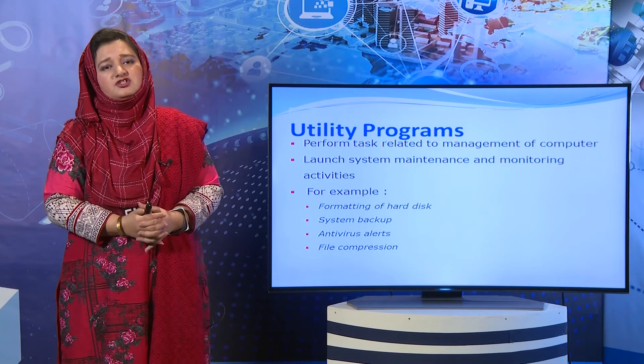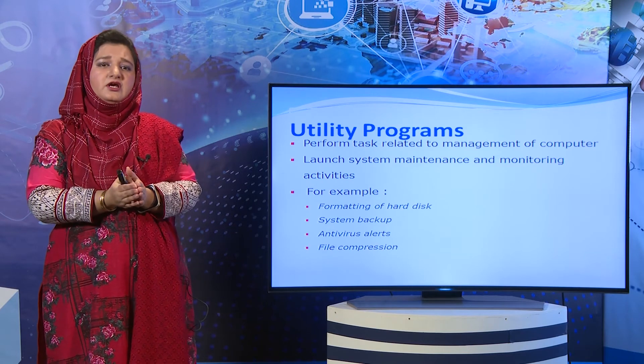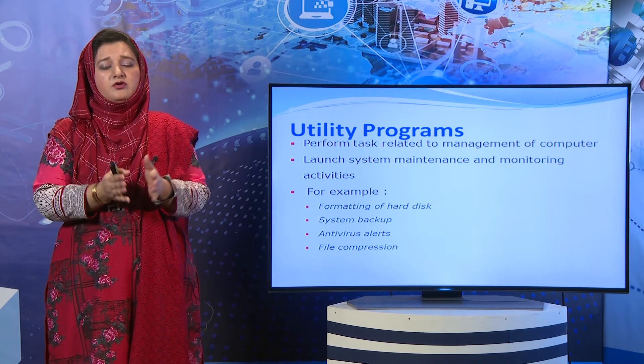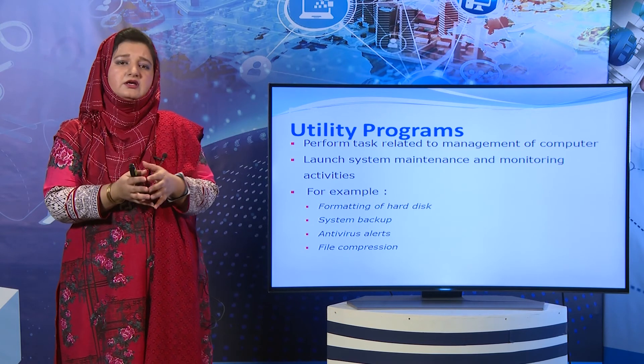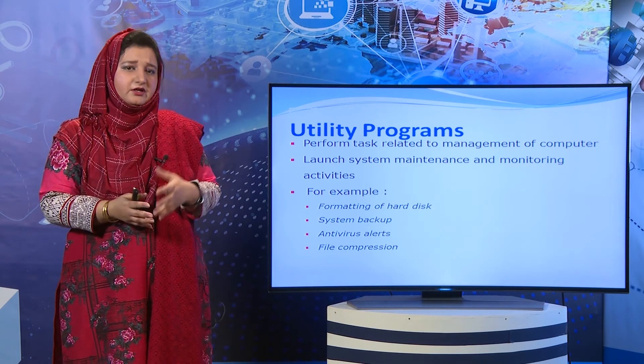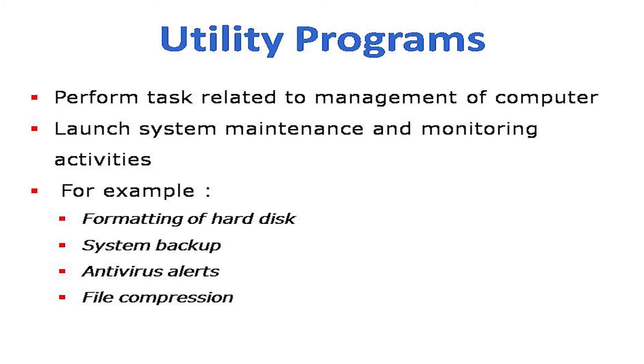System software کی دوسری kind ہے utility programs. Utility programs آپ کے computer میں embedded ہوتے ہیں یا operating system کے ساتھ install ہوتے ہیں. ان کا basic function ہے computer hardware processes کو monitor اور analyze کرنا — یہ دیکھنا کہ کام صحیح ہو رہا ہے یا نہیں. مثلاً اگر hard disk memory بہت زیادہ consume ہو جائے اور clean up کی ضرورت ہو تو utility programs یہ کام کرتے ہیں۔